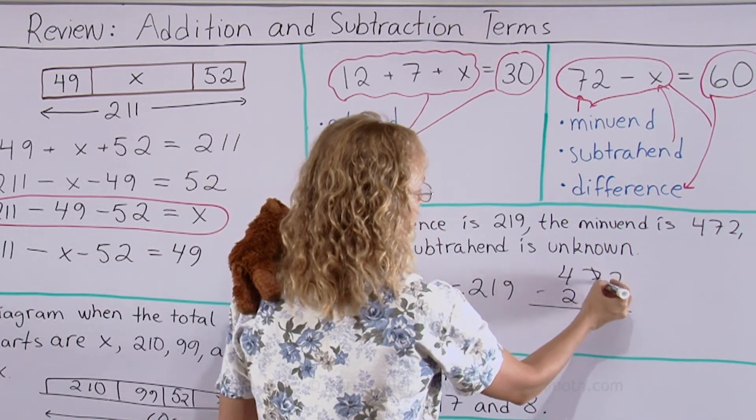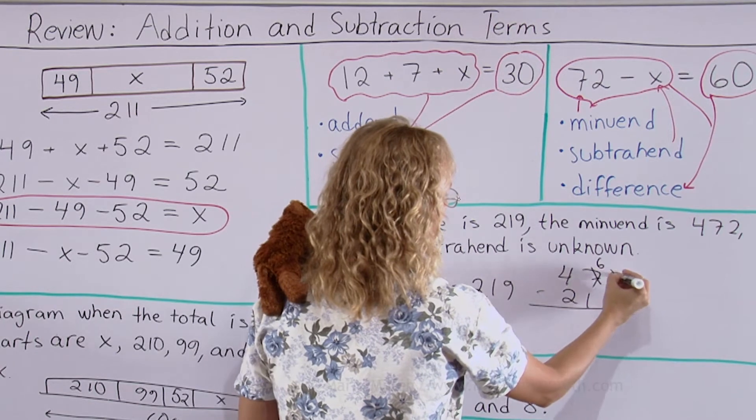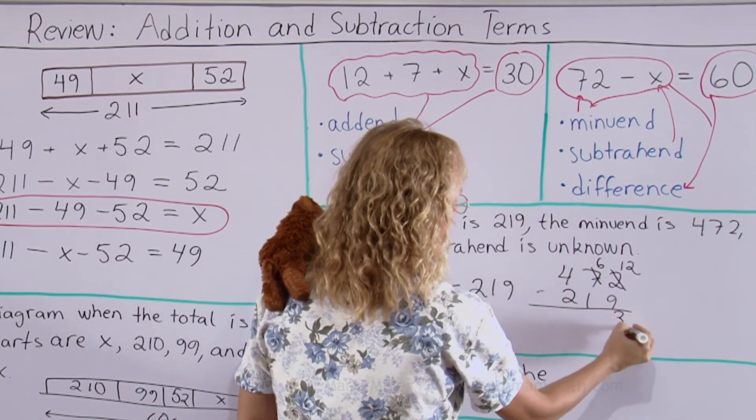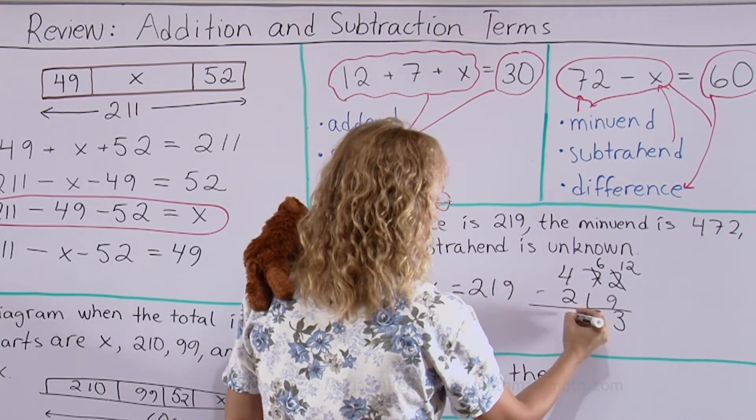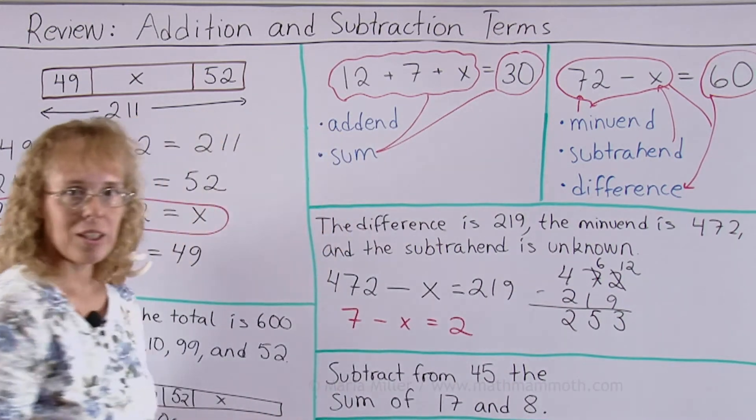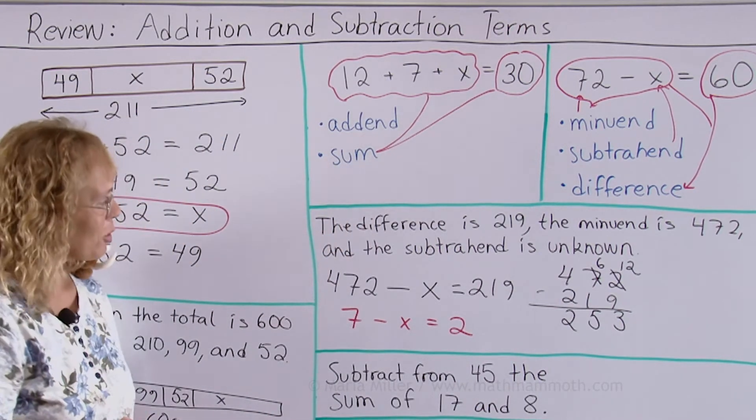2 minus 9, no one can do it. So we need to regroup here. 3, 5 and 2. So that is our answer 253. And you could check it by adding also.